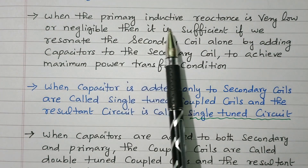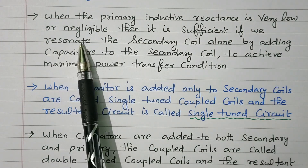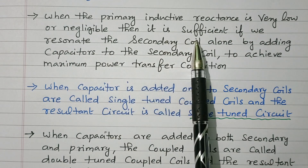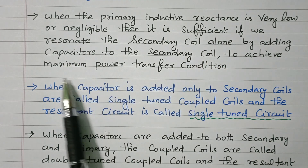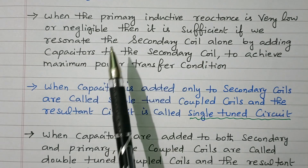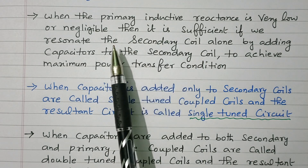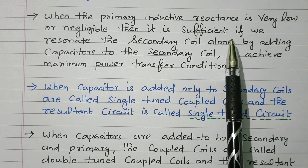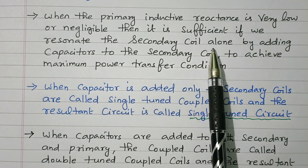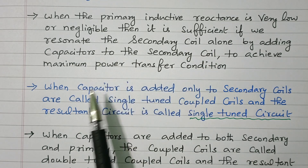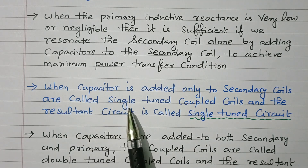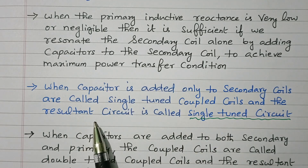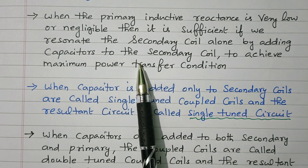When the primary inductive reactance is very low or negligible, it is sufficient to resonate the secondary coil alone by adding a capacitor to the secondary coil to achieve the maximum power transfer condition. When a capacitor is added only to the secondary coil, it is called a single tuned coupled coil, and the resultant circuit is called a single tuned circuit.